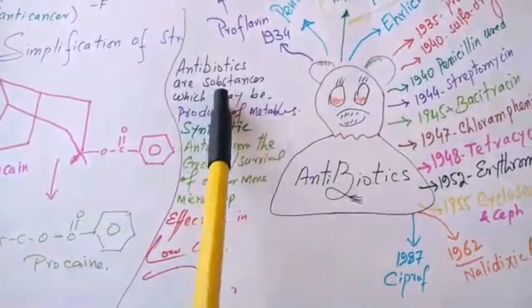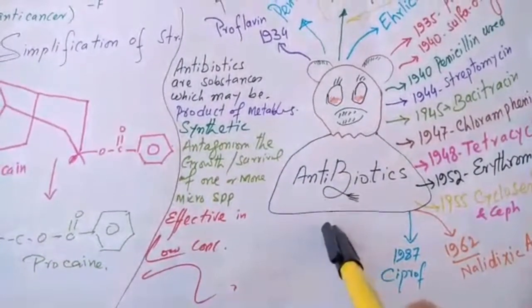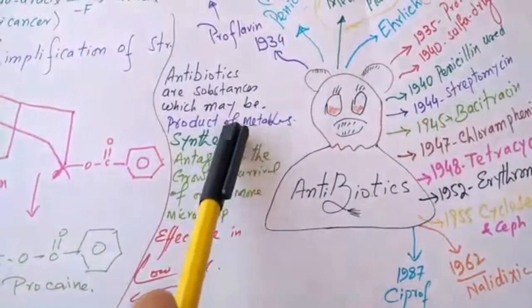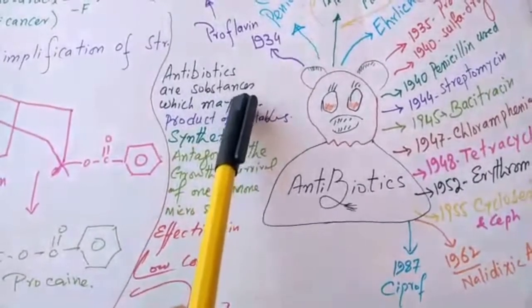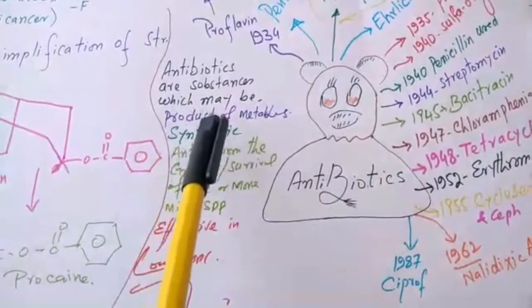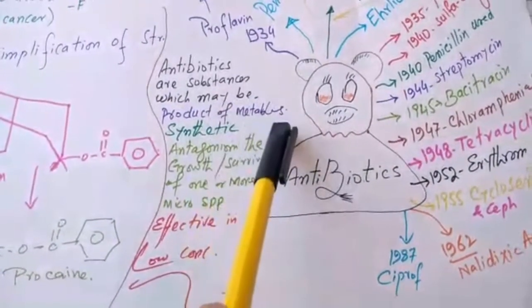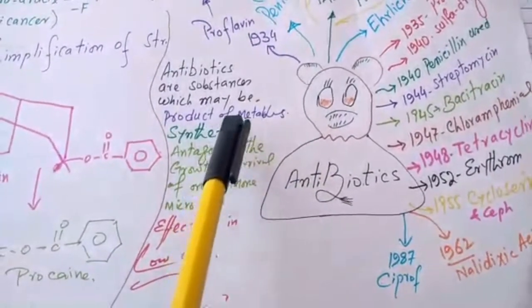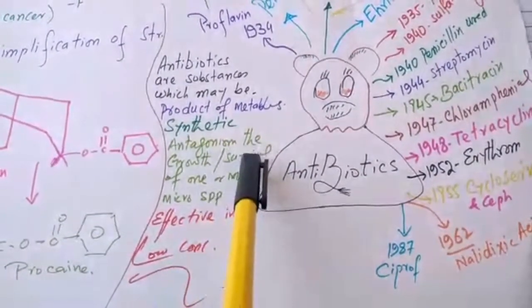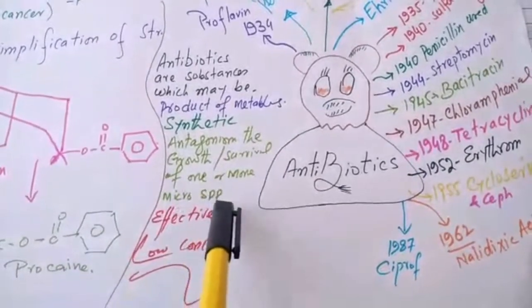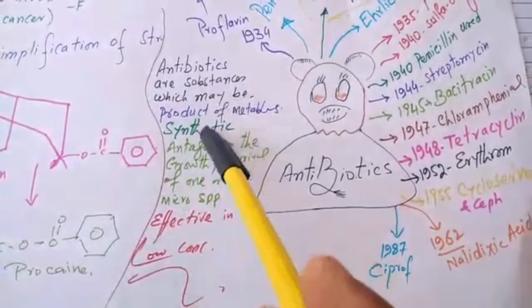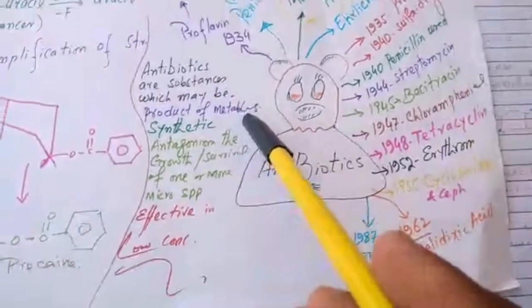Bismillah ar-Rahman ar-Rahim. We can define antibiotics according to medicinal chemistry. Antibiotics are substances which may be products of metabolism, metabolites, or synthetic compounds which can antagonize the growth or survival of one or more microbial species and which are effective in low concentrations. Such compounds and natural products are known as antibiotics.